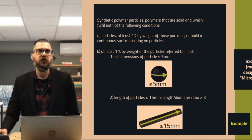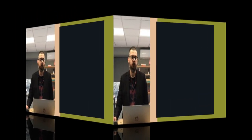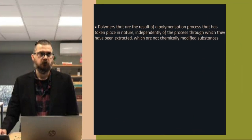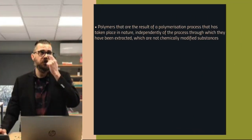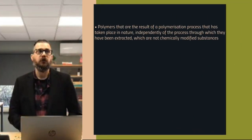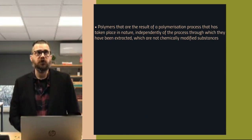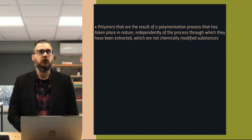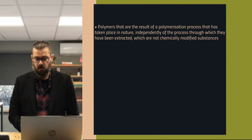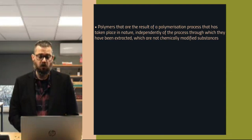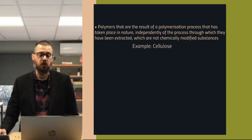There are certain cases that are excluded from the designation microplastic. It is polymers that are a result of polymerization that occurs in nature — independent from the process in which they are extracted — as long as you don't chemically modify these substances. Natural polymers can be DNA or, for example, wood, which brings us to cellulose.